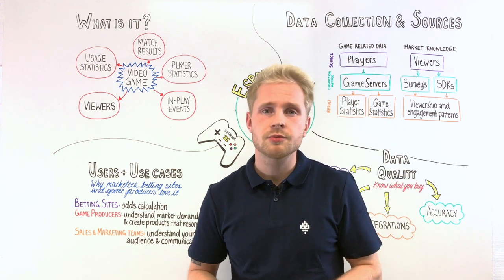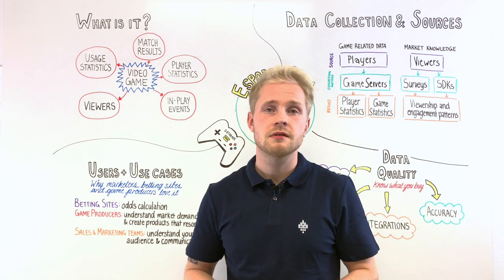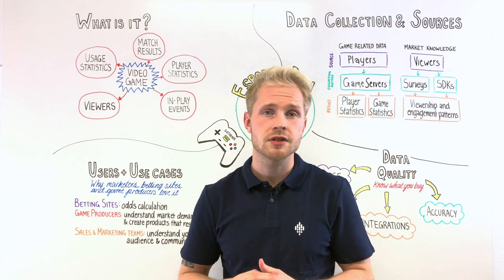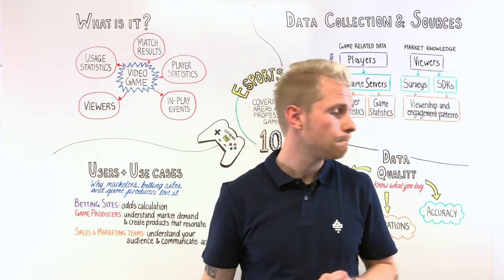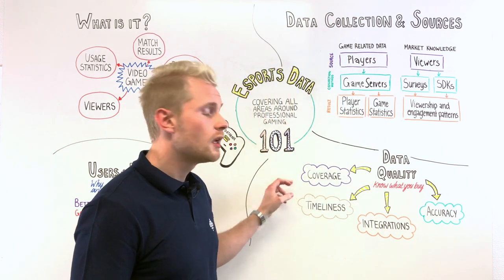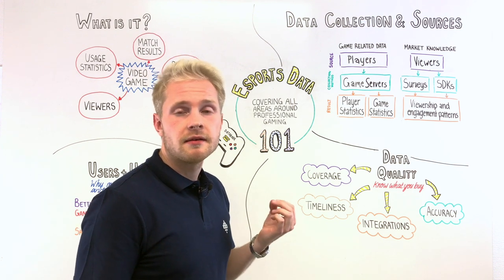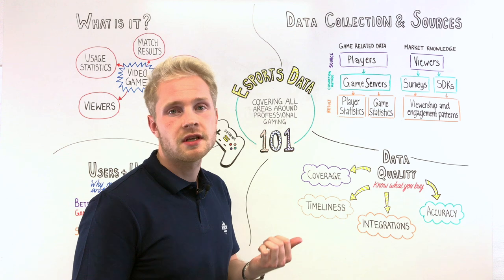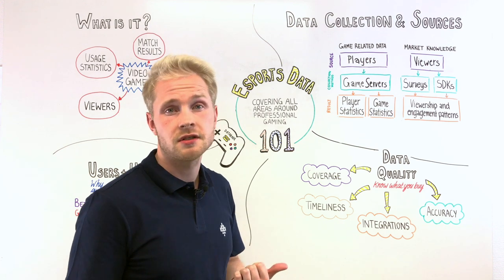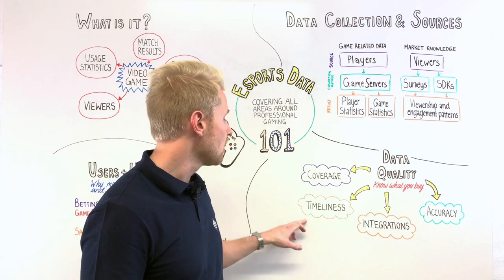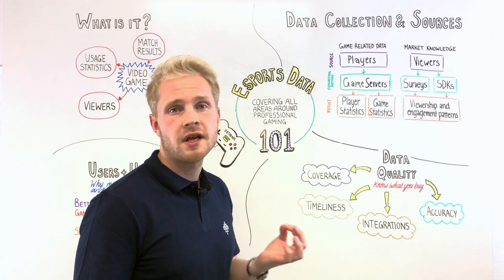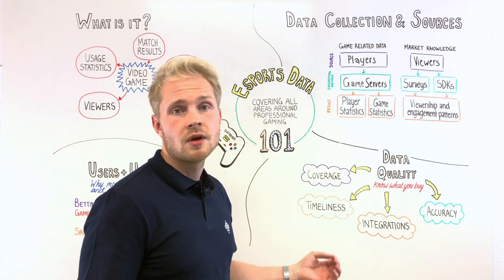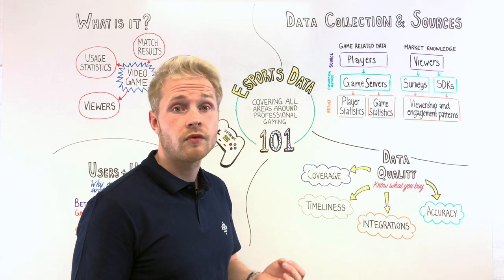For anyone willing to use esports data in their operations, there are four major topics to take under consideration in terms of data quality. Coverage: can the data set enable you to understand the games, the genres, and all the geographical locations that you're interested in? Timeliness: how often does the data provider update their database? Can they provide you with a real-time API that you're looking for?